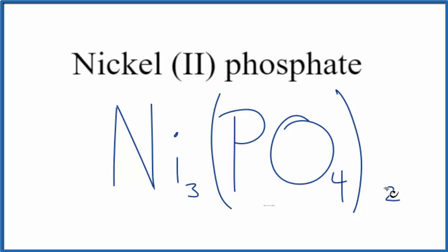Let's check our work. We said nickel would be 2+ because of the Roman numeral. We said the whole phosphate ion is 3-. Two times 3- is 6-, and three times 2+ is 6+. So 6+ and 6- adds up to a net charge of zero. This is the correct formula for nickel(II) phosphate.